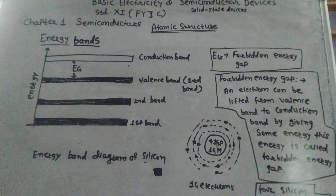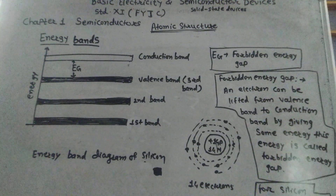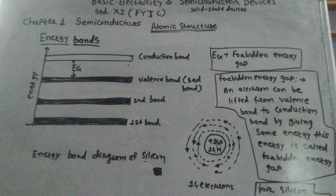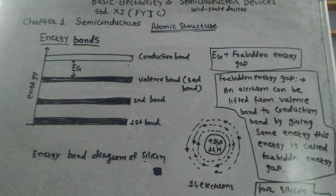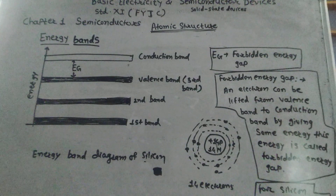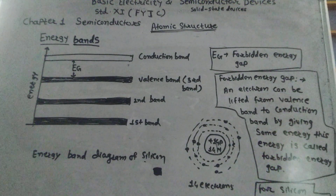Electron volt is a unit of energy. When atoms bond together to form a solid, there are millions of electrons belonging to each orbit of the atoms, and each of them has a different energy.